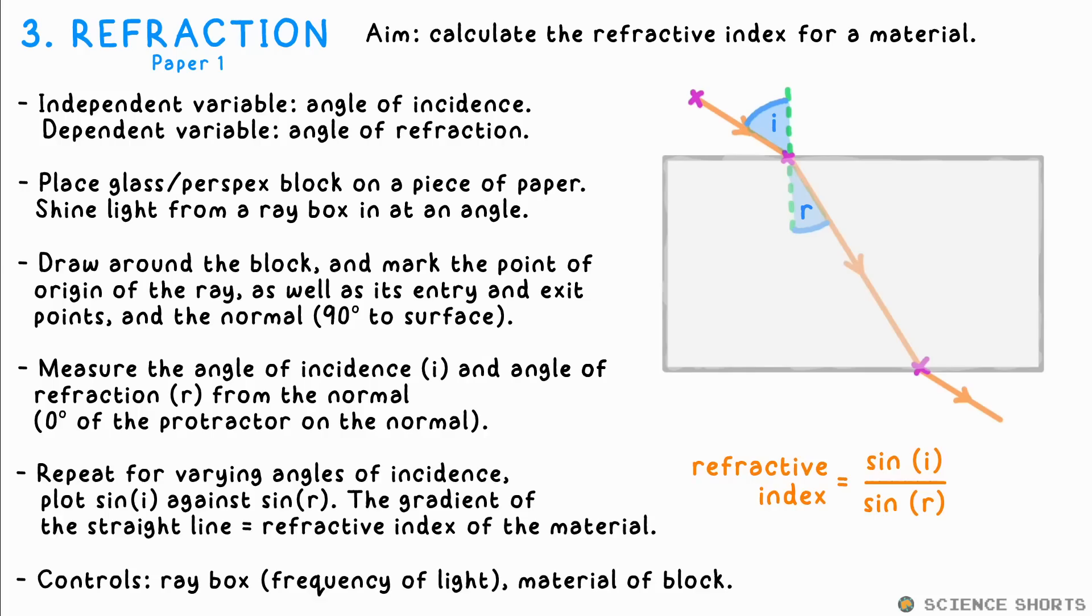We change the angle of incidence, then measure what the new angle of refraction is. Plotting sine I against sine R will give you a straight line, and the gradient of this graph gives us what we call the refractive index of the material.